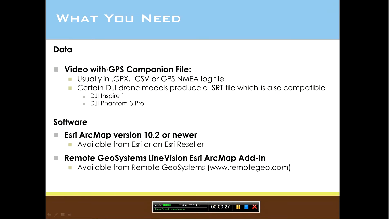We're going to need the data. In this case, it's a video with what we refer to as a GPS companion file. We usually see this in a .gpx format, .csv, or a GPS NMEA log file. Also, certain DJI drone models do produce a .srt file, which is also compatible with the Line Vision software — those are the DJI Inspire 1 and the DJI Phantom 3 Pro.